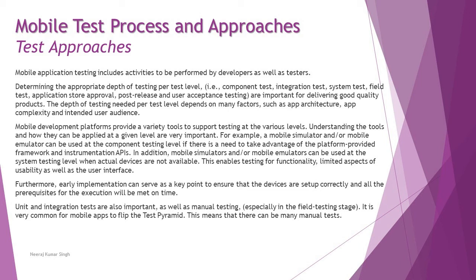Earlier implementations can serve as a key point to ensure that devices are set up correctly and all prerequisites for execution will be met on time. Unit and integration tests are also important, as well as manual testing, which includes especially the field testing stage. It is very common for mobile apps to flip the test pyramid — meaning there can be many manual tests. Generally in agile we write a lot of automated tests, but for mobile applications the pyramid can be inverted, making use of a lot of manual tests to validate functionalities.